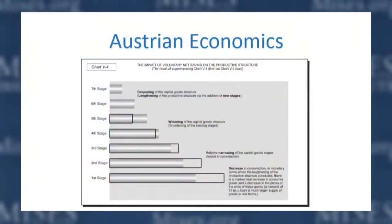The resources for higher stages come from those utilized in the lower stages. When consumption decreases, prices of consumer goods fall, rates of return in consumer goods industries become lower relative to higher stages, so resources are freed up. The capital structure deepens, and also widens at the previous highest stages — stages four and five are wider than before, meaning more production occurs at those stages — while it narrows at stages one, two, and three due to decreased demand for consumer goods.